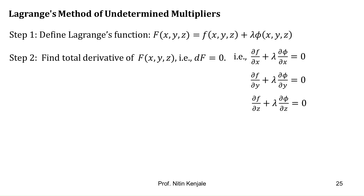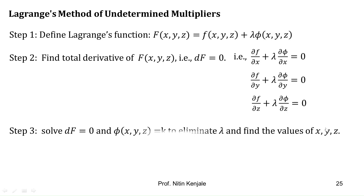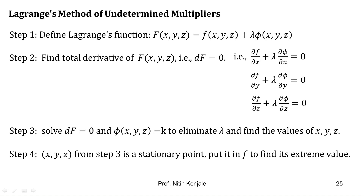Note that these equations are obtained when we equate the total derivative of capital F with 0. Also note that if f consists of only two variables x and y, there will be only two Lagrange's equations — the first and the second. In the next step, we solve these three Lagrange's equations and the constraint equation phi(x,y,z) = k to eliminate lambda and find the values of x, y, z. The values obtained form coordinates of the stationary points. Finally, we substitute these stationary points in small f to find its extreme value.